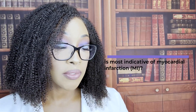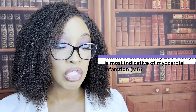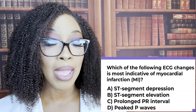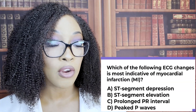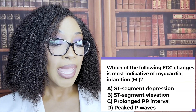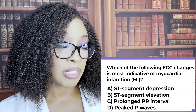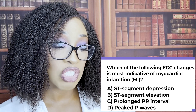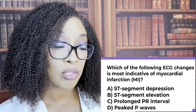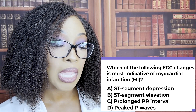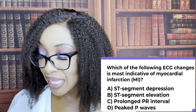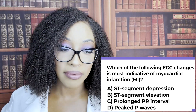All right, guys, let's get started. First question: which of the following ECG changes is most indicative of myocardial infarction? A, ST segment depression; B, ST segment elevation; C, prolonged PR interval; or D, peaked P waves?